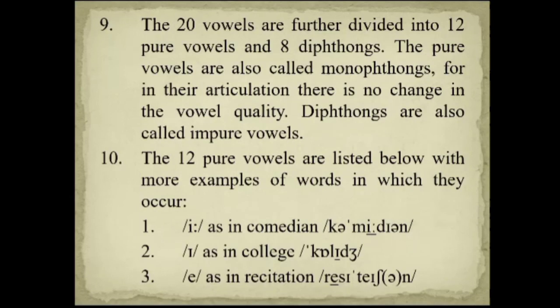The 20 vowels are further divided into 12 pure vowels and 8 diphthongs. The pure vowels are also called monophthongs, for in their articulation there is no change in vowel quality. Diphthongs are also called impure vowels. The 12 pure vowels are listed below with more examples of words in which they occur.